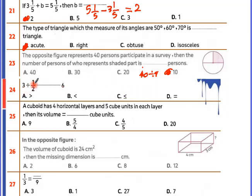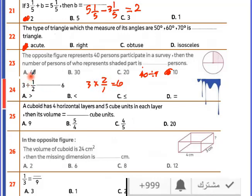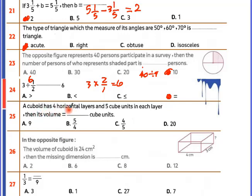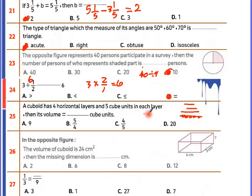Three divided by half: change division to multiplication, so 3 times 2 over 1 equals 6. For the volume of the figure: there are 5 cubic units in each layer and four horizontal layers, so count one, two, three, four. In each layer there are five. So 4 times 5 times 3 gives the volume.